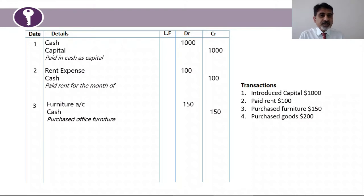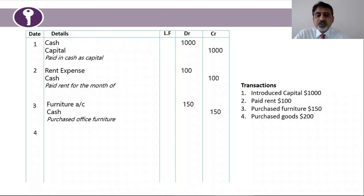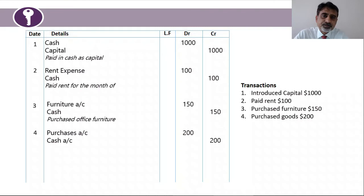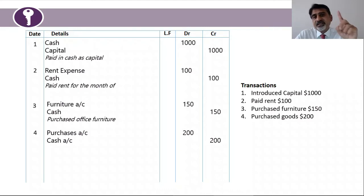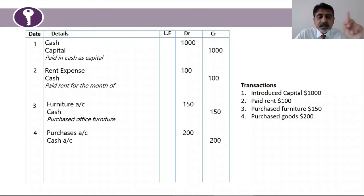Purchases Account is treated as an expense item. Although you might think it's inventory (an asset), for this purpose consider purchases as an expense. Increase in expense means debit, so: debit Purchases Account $200, credit Cash Account $200. To summarize: if a transaction names a specific asset like 'purchased computer' or 'purchased motor vehicle,' that's a non-current asset. But 'purchased goods' or 'purchased inventory' means it's inventory for selling, and the account is Purchases Account.